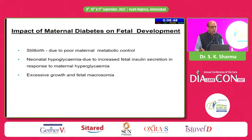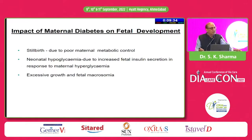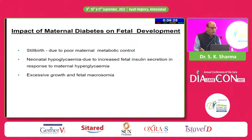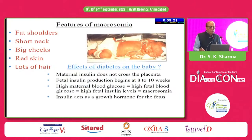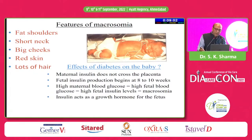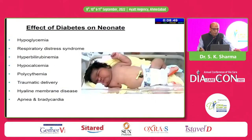In this scenario, there are more stillbirths and neonatal hypoglycemia. Once the fetus is delivered and sugar profiles are not controlled, the fetus has high insulin levels. Suddenly the supply line from the mother is stopped, and the fetus has high chances of developing hypoglycemia. With continuous good supply of nutrients and hyperinsulinemia, the fetus will have fetal macrosomia — with features like fat shoulders, short neck, big cheeks, and red skin. Maternal insulin does not cross the placenta, but fetal insulin production begins at 8 to 10 weeks. High maternal blood glucose leads to high fetal blood glucose and high fetal insulin levels, ultimately leading to macrosomia. Insulin is a very potent anabolic and growth hormone-type substance.